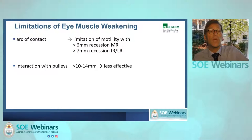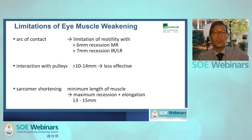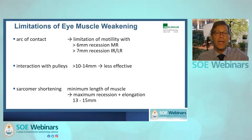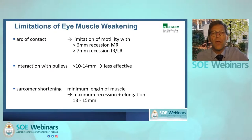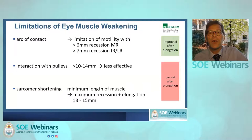There are other limitations when you weaken a muscle. One is the interaction with the pulleys, which occurs when the muscle is more than 10 to 14 millimeters recessed, weakening the effect of your recession. The overall shortening of a muscle is also limited by sarcomere shortening — when you get more than 13 or 15 millimeters, the muscle cannot get shorter anymore. When you do muscle elongation, the arc of contact can be improved; however, elongation of the tendon does not reduce the effect of interaction with the pulleys or sarcomere shortening.